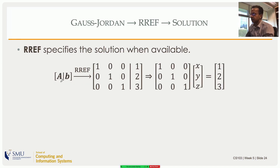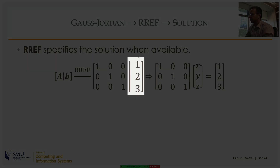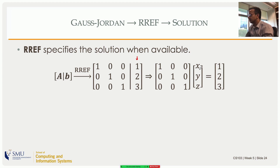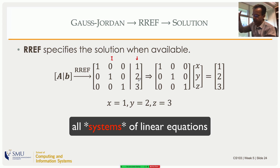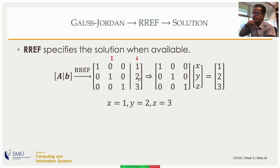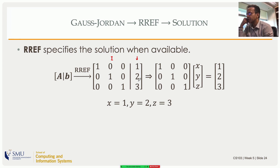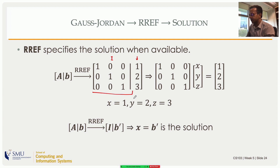If the RREF of a matrix is the identity matrix with some values in the augmented column, that says x, y, z equal those values, since the identity times any vector returns that vector. This means that when a unique solution exists, the RREF will always contain an identity matrix in the coefficient part. All non-singular, invertible matrices row-reduce to the identity matrix — they are row equivalent and column equivalent to the identity matrix.